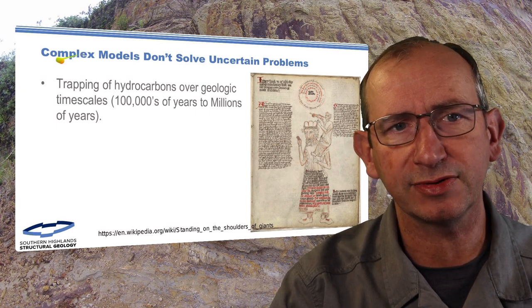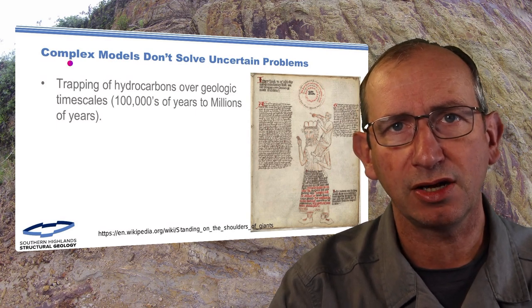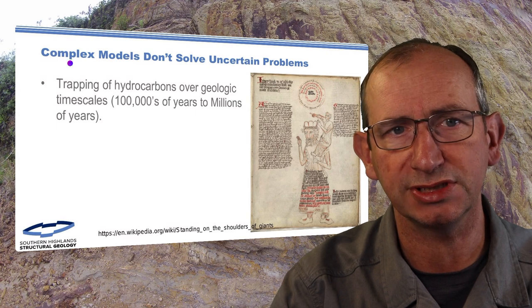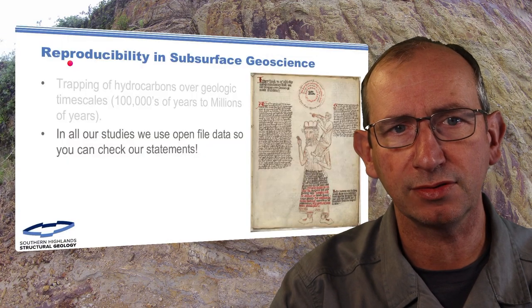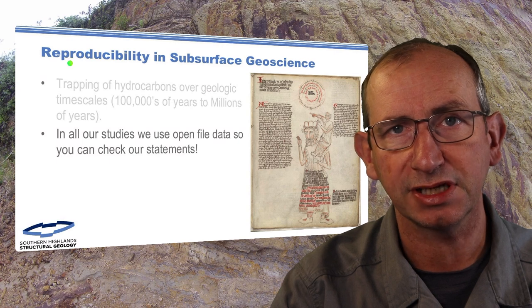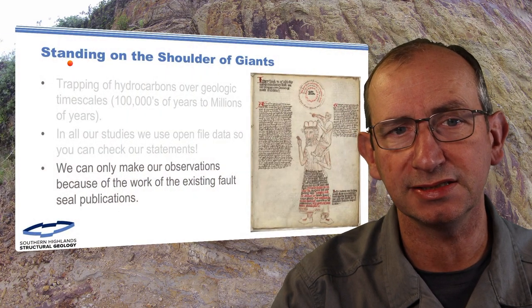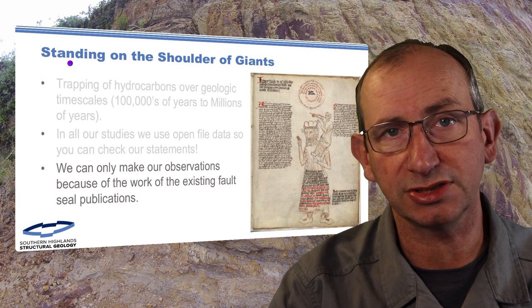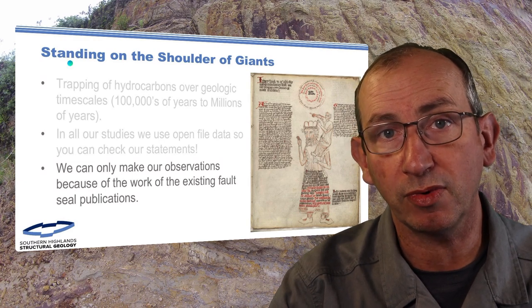The key thing we're thinking about is that complex models don't solve uncertain problems. There's a huge amount of uncertainty in geology. We're trying to work on how we can use better handling of that uncertainty with simpler models. Not layering on complexity in the hope of solving it. In all our studies we're using open file data so you can check our statements. Science progresses because we break ideas, and we can only make these observations because we stand on the shoulders of giants.